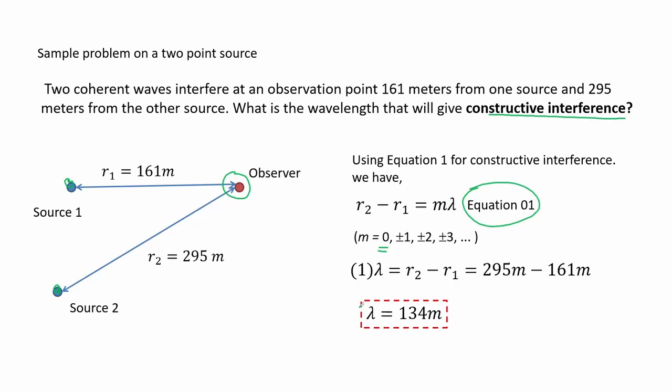So for m equals 1, we have the wavelength as the difference of the distances of the two sources. The wavelength that will give constructive interference has a length equal to the path length difference, which is 134 meters.